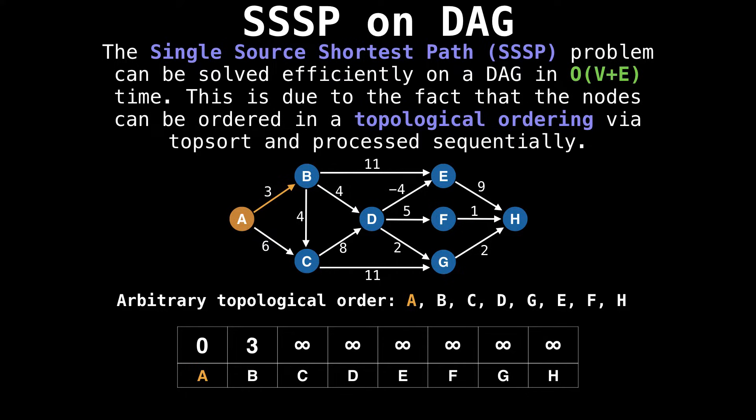This is the edge relaxation step of the algorithm. We notice that a value of three is better than infinity, so we update the best value of B to be three, then the best value to C to be six.